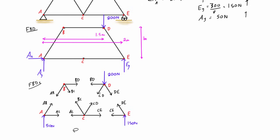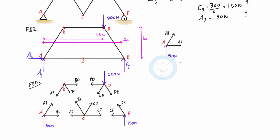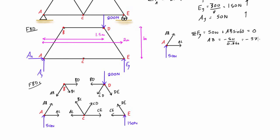We start solving at joint A, which has a maximum of two unknowns. Taking the sum of forces in the y-direction first: we have 50 newtons going up plus AB times sine 60, all equal to zero. Rearranging for AB: AB equals negative 50 over 0.866, giving us the internal force in AB equals negative 57.7 newtons. That negative sign means AB is in compression.